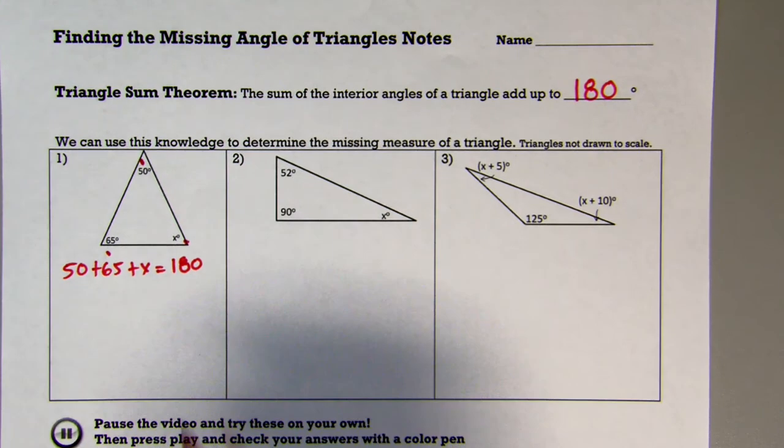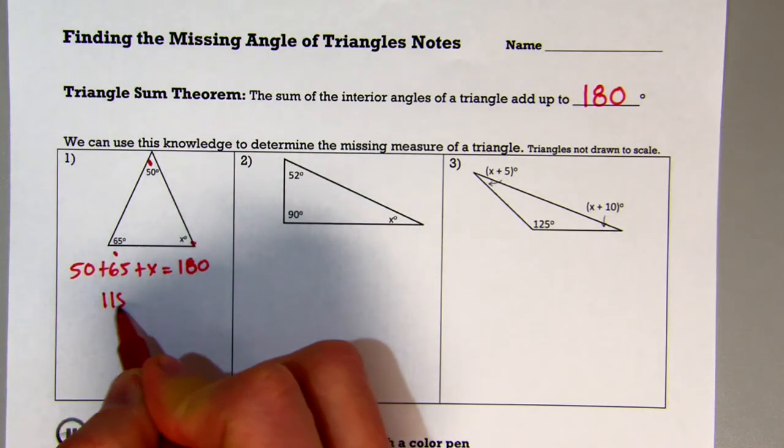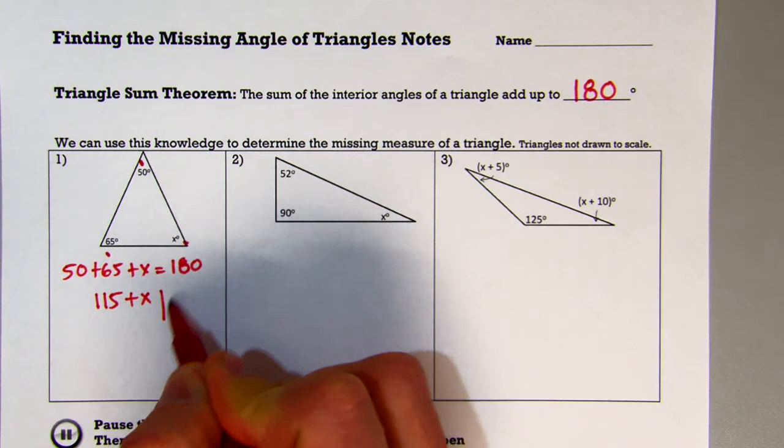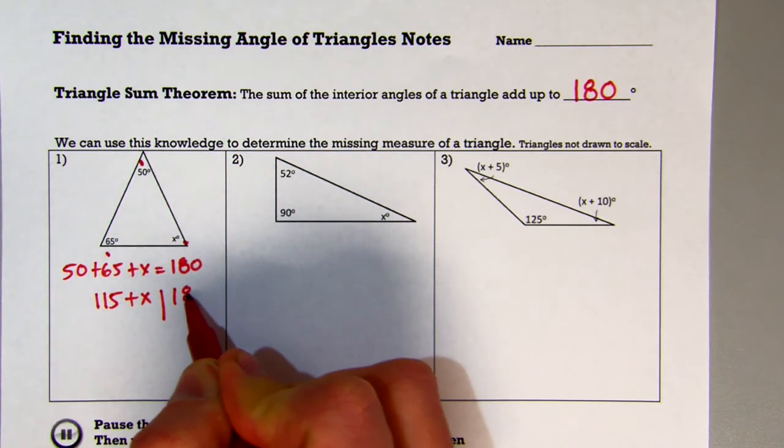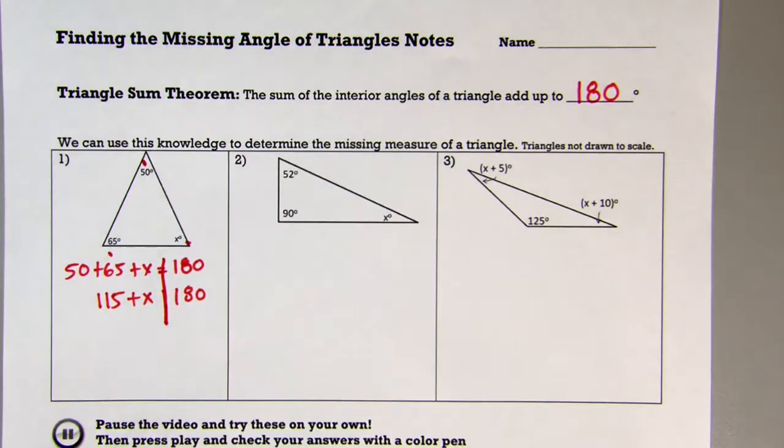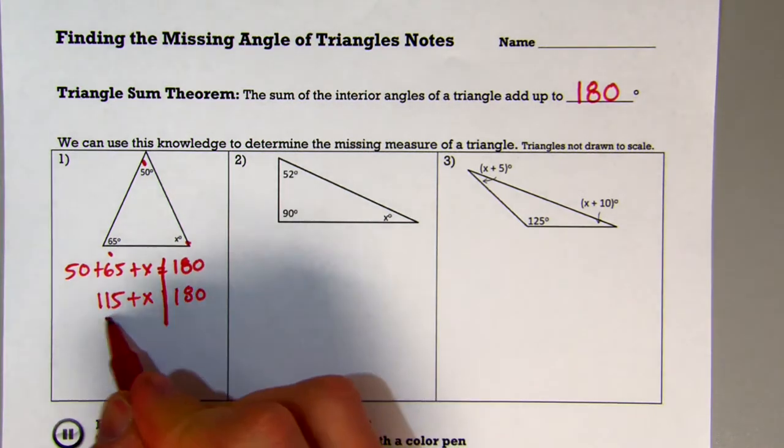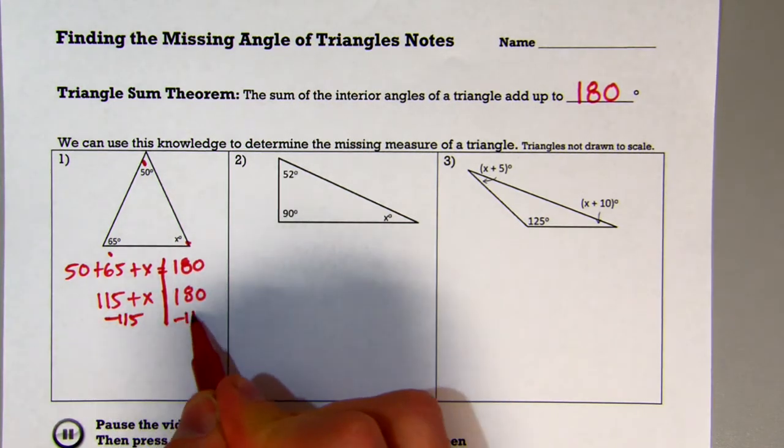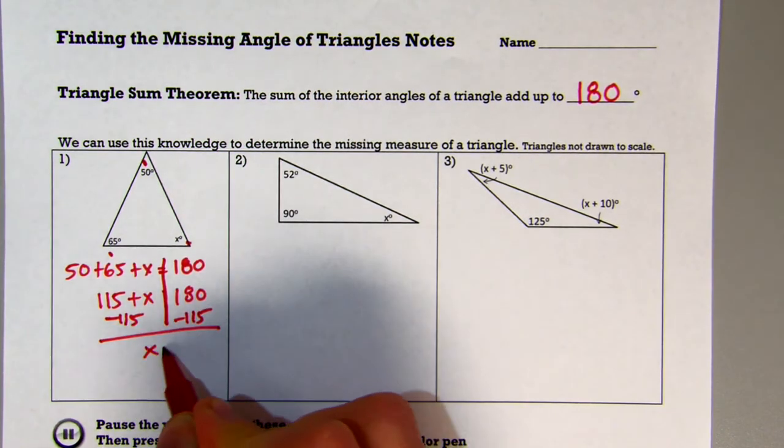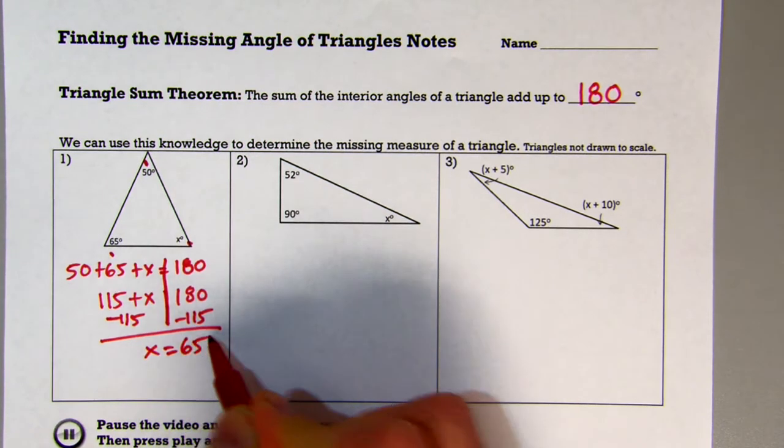I then can go ahead and combine my like terms. So I have 115 plus x equals 180. And I can go ahead and subtract by 115, and I get x is equal to 65.